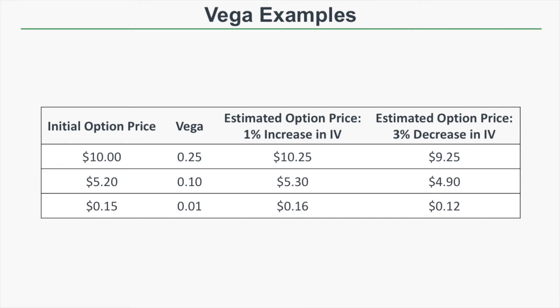While vega is explained as an option's price change relative to changes in implied volatility, I don't really like that definition, because changes in option prices are what actually drive implied volatility. If the market starts buying options in a frenzy, option prices increase and implied volatility increases. So another way to interpret vega: if an option's price increases by the amount of vega without any change in the stock price or the passage of time, you would expect implied volatility to have increased by 1%.